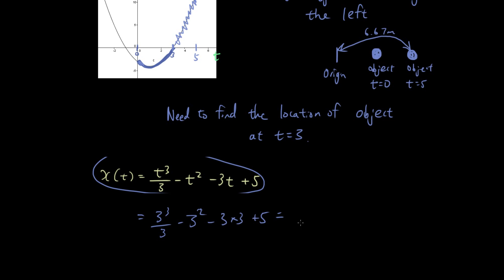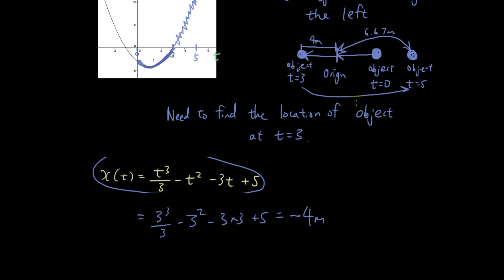Substituting t = 3, we get −4 meters. So at t = 3 seconds, the object is located 4 meters to the left of the origin. This tells us what happened: between t = 0 and t = 3, the object moved left — first 5 meters to reach the origin, then another 4 meters beyond it — a total of 9 meters to the left. Then between t = 3 and t = 5, it moved to the right 4 + 6.67 = 10.67 meters.